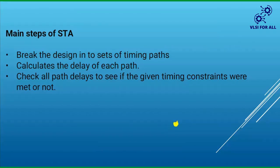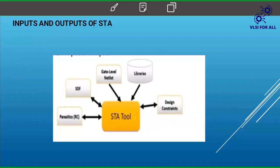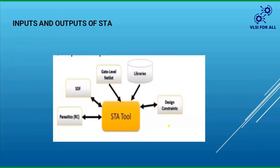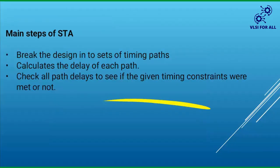Now, what are the inputs and outputs of STA? After synthesis, we have a gate-level netlist, which is given as input to STA. Libraries are also given as inputs to STA. The outputs of STA are design constraints, RC constraints, and SDC files. So the inputs are gate-level netlist and library files, and the outputs are design constraints and RC constraints.